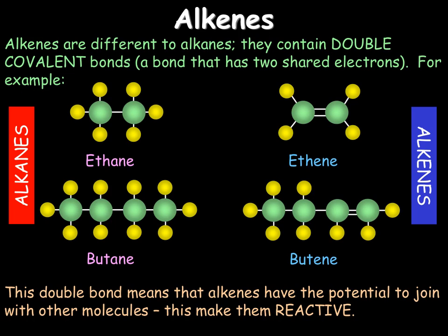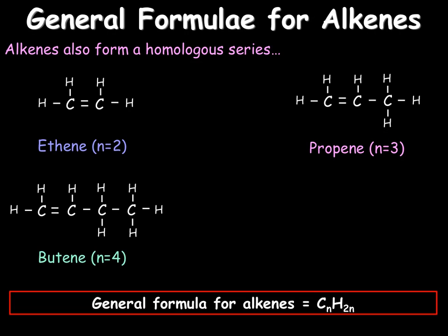We will now look at the general formula for alkenes. Alkenes also form a homologous series — a different one to the alkanes. Looking at ethene, propene and butene, each carbon has 4 bonds. This gives us a general formula of CnH2n — we do not do the plus 2 that we do for alkanes. Pause the video and work out the number of hydrogens for hexene, an alkene with 6 carbons. Using our general formula, C6 with 2 times 6 equals 12, so our formula for hexene would be C6H12.